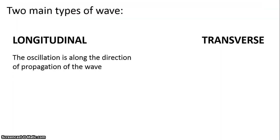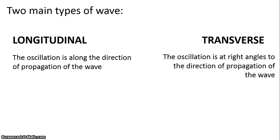Those two definitions are very important. The fact that for a longitudinal wave the oscillation is along the direction of propagation of the wave and for a transverse wave the oscillation is at right angles to the direction of propagation of the wave. Those are two definitions that you need to learn for the exam and you also need to learn some examples.